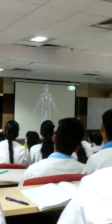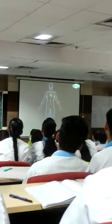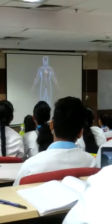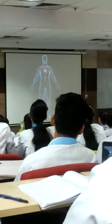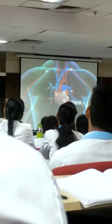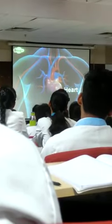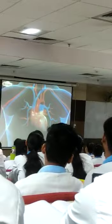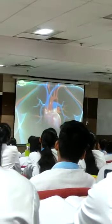The circulatory system comprises blood, blood vessels, and the heart. The heart is the central organ for pumping blood throughout the body. The heart is made up of strong cardiac muscles.